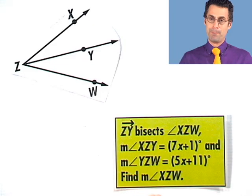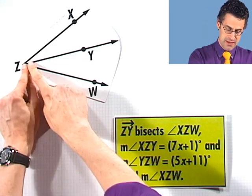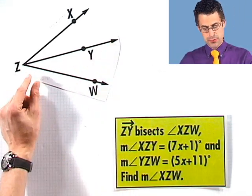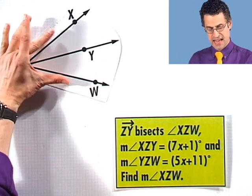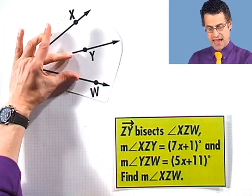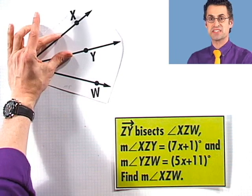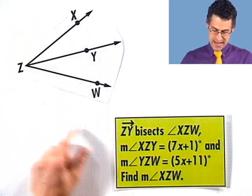All right, let's take a look at this question, which involves angle bisectors, and these are always great fun. An angle bisector is going to be some ray that has the property that it cuts this angle into two angles, each of which have the same measure. So check it out.